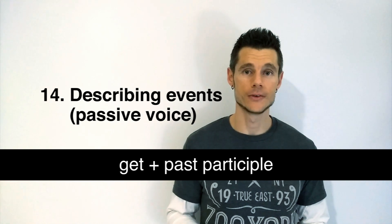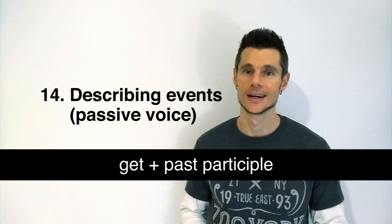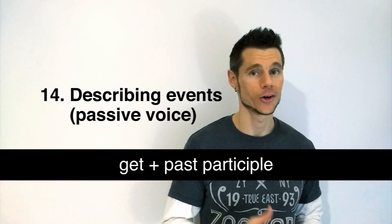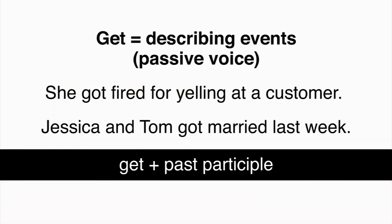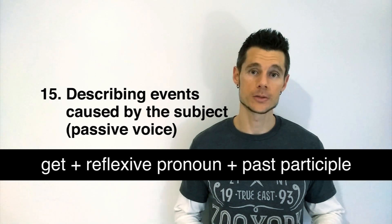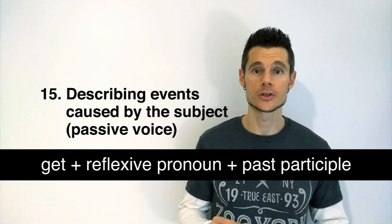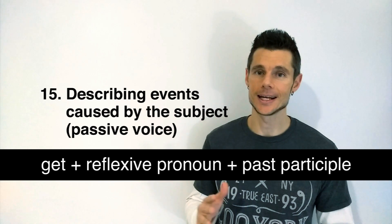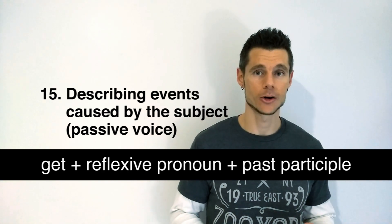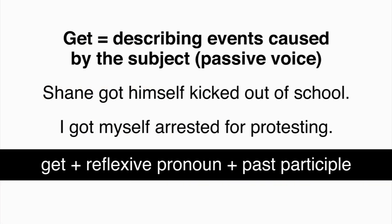GET can be used to describe events in the passive voice. The structure used is GET plus past participle. She got fired for yelling at a customer. Jessica and Tom got married last week. GET can also describe events caused by the subject — also in the passive voice. The structure is GET plus reflexive pronoun plus past participle. Shane got himself kicked out of school, which emphasizes that it's Shane's fault. I got myself arrested for protesting — this emphasizes that it's my fault.